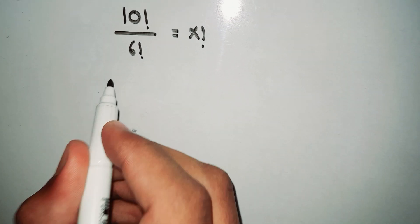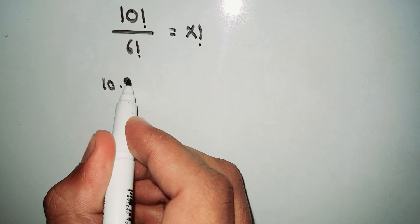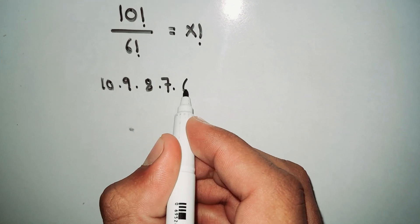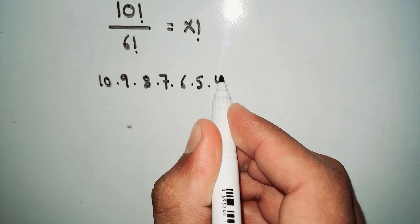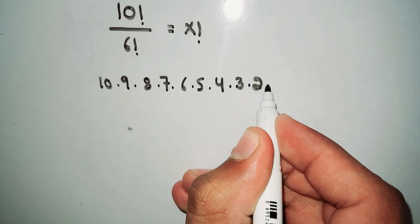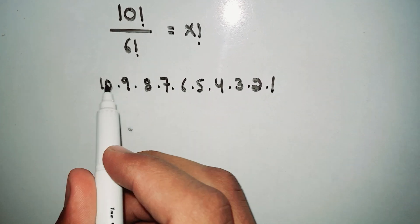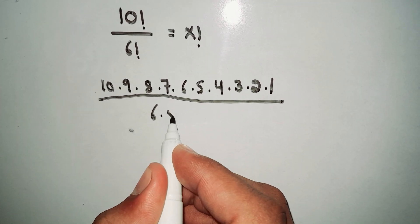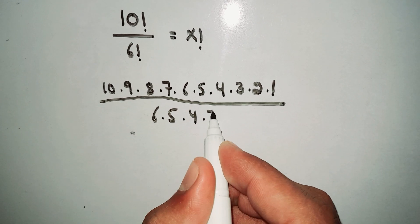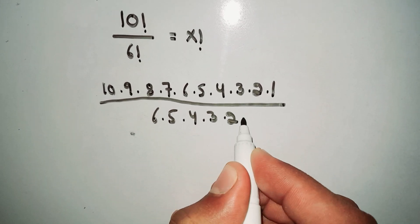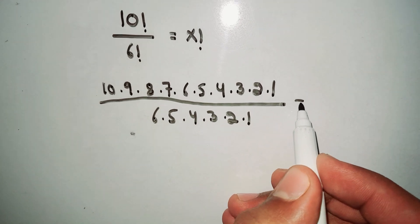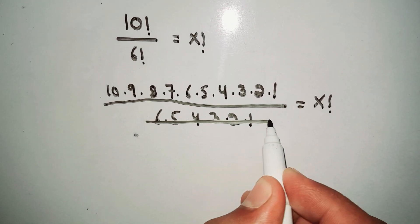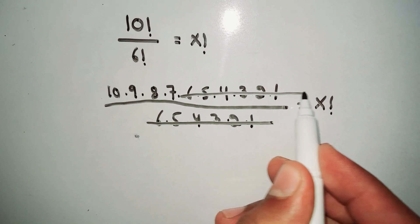First of all, we write 10 factorial as 10 × 9 × 8 × 7 × 6 × 5 × 4 × 3 × 2 × 1, divided by 6 factorial which is 6 × 5 × 4 × 3 × 2 × 1, and this equals X factorial.